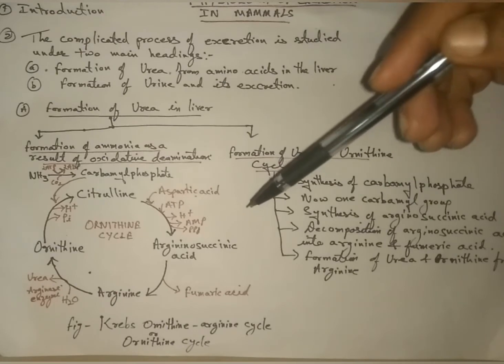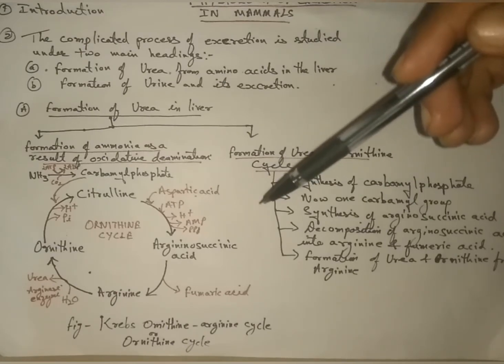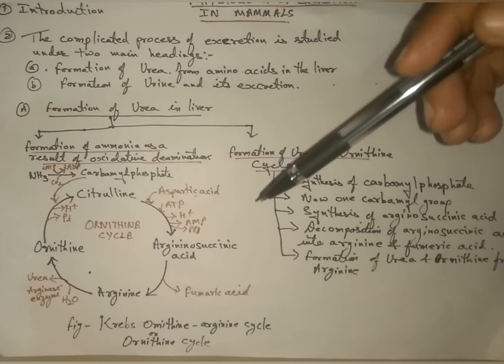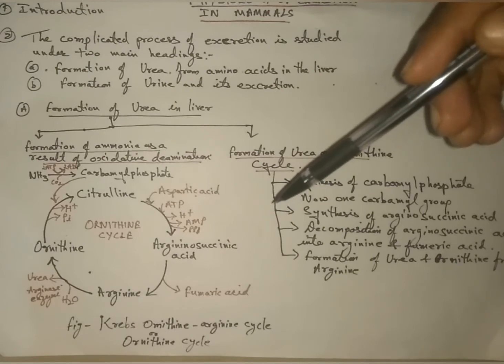The surplus amino acids in liver, and to a little extent in kidney, undergo oxidative deamination by enzyme oxidase. As a result of these reactions, ammonia is released.